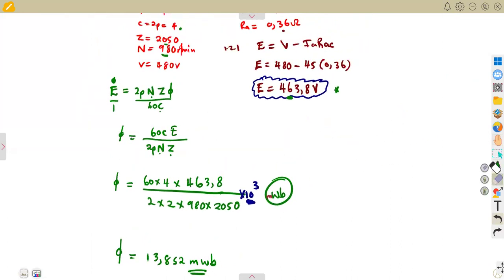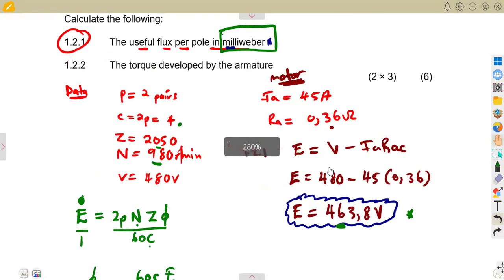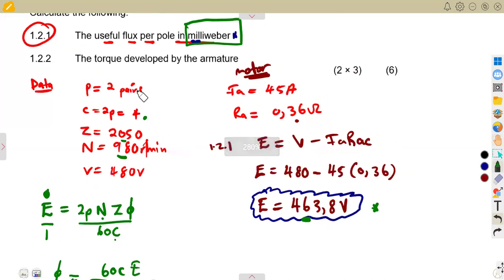That is what you're going to have if you were to calculate this properly. Just also consider your calculations. If there's anything let us know on the comment section so that we can be able to refer back to the question. That is 1.2.1. Then 1.2.2, calculate the torque developed by the armature.